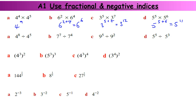When I'm dividing, I'm subtracting the powers. So I've got 4 to the power of 8 minus 5, which is 4 to the power of 3. Subtract these powers, we get 7 to the 3. Subtract these powers: 9 to the 3. And 5 to the power of 5 minus 3 is 2.